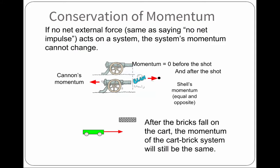So, the conservation of momentum says if no external force, same as saying no net impulse, acts on a system, the system's momentum cannot change. So, in the cannon's sense, the momentum equals zero before the cannon is shot, and it will equal zero after the cannon is shot. Because the cannon's momentum and the shell's momentum are equal and opposite.